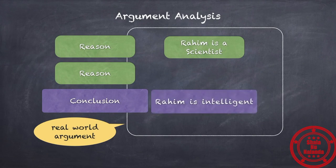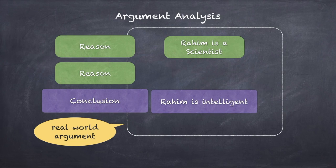What happens in a real world argument? Somebody will say: Rahim is a scientist, and therefore he must be intelligent. They won't even say 'therefore' — just 'Rahim is a scientist, Rahim is intelligent.' Rahim is a scientist is the reason given, and Rahim is intelligent is the conclusion drawn.